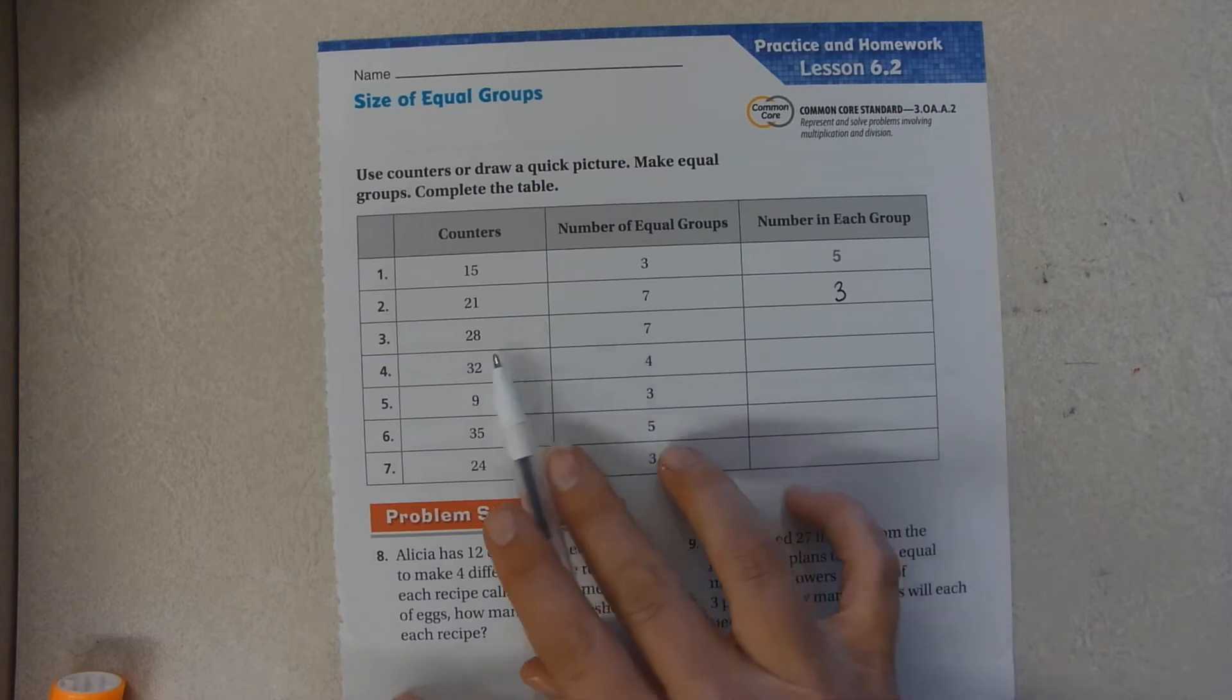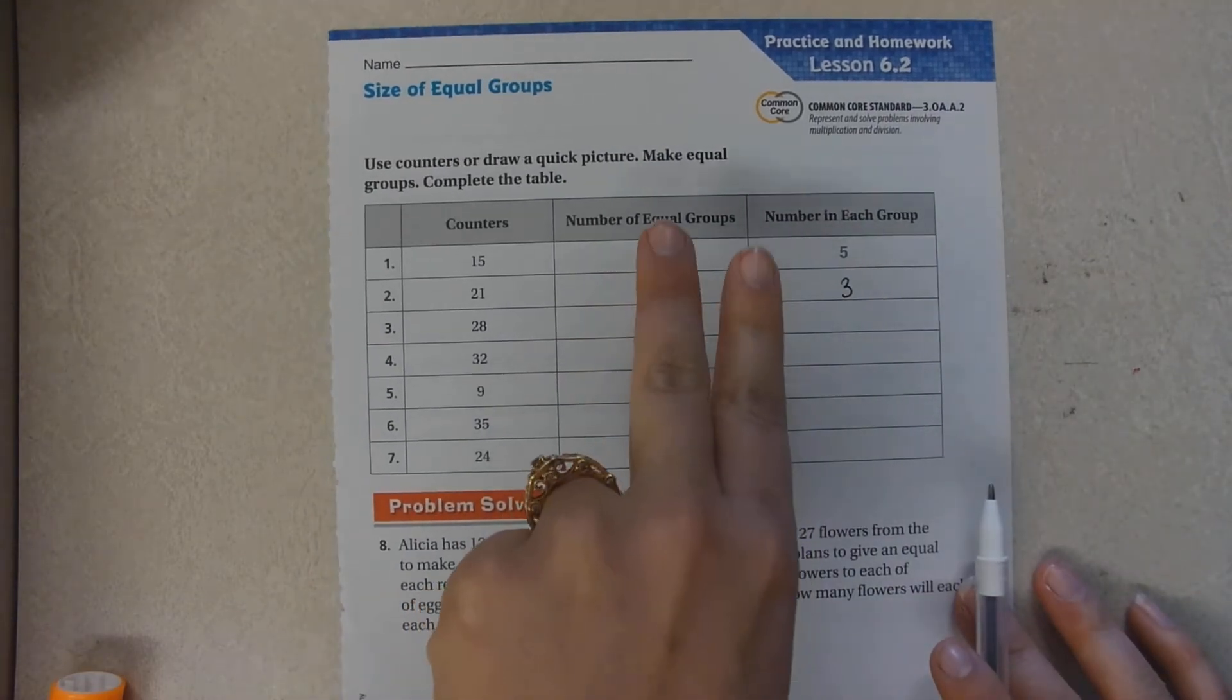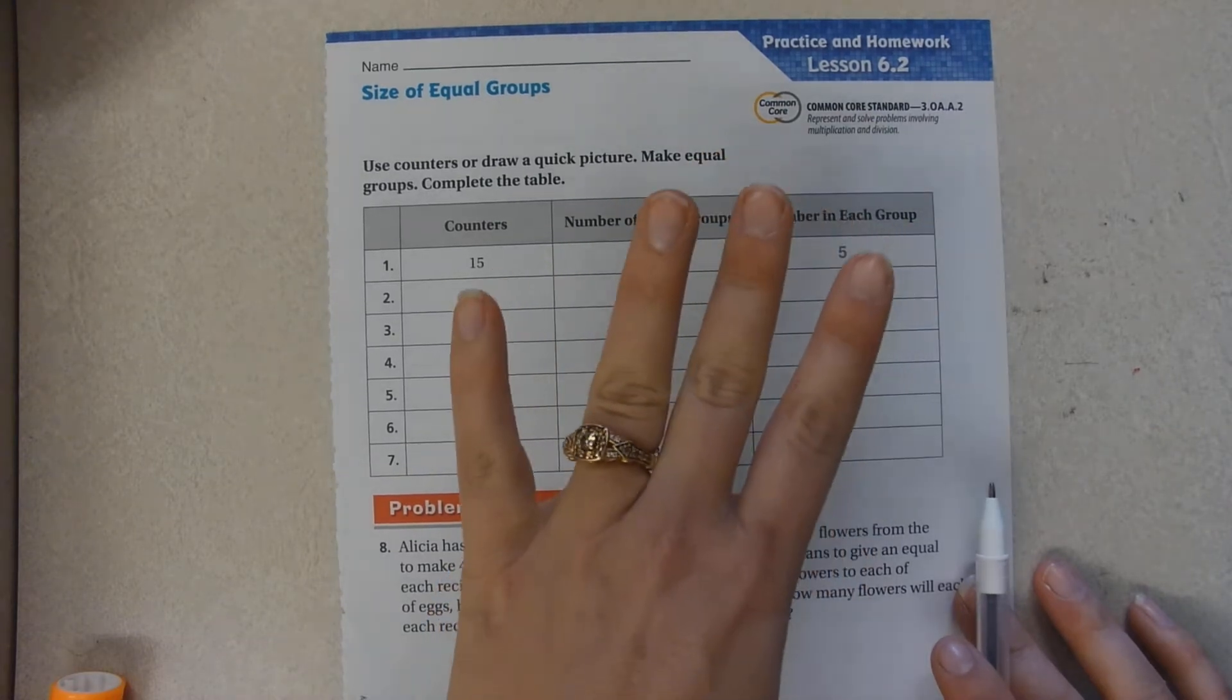How many times does seven go into 28? Seven, 14, 21, 28.